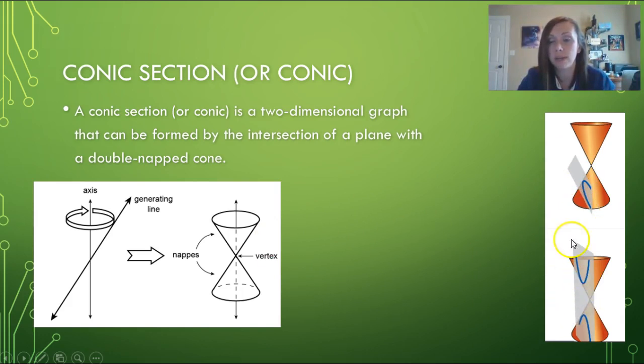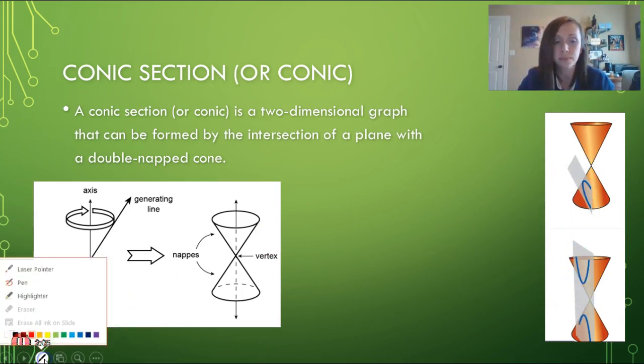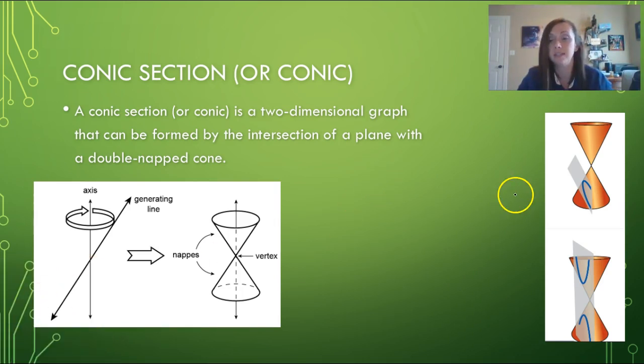Here are two of them over here on the right side and these different conic sections are going to have different names. This first one on the top is when your plane intersects one of the naps of the cone and intersects the base of the cone, and this is what we call a parabola.